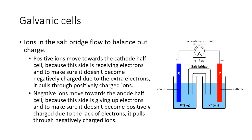Ions in the salt bridge flow to balance out the charge — maintaining electrical neutrality. As electrons flow one way, positive ions flow into the negative side and negative ions flow into the positive side. That is galvanic cells — this video is really just about the structure of them, and we'll go into how they work in our next video on the standard reduction potential table.